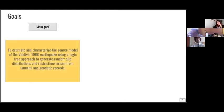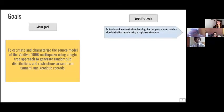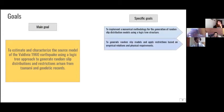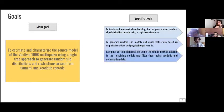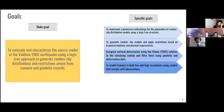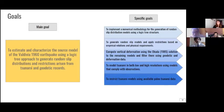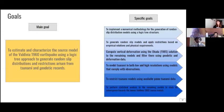The goals. The main goal is to estimate and characterize the source model of the Valdivia 1960 earthquake, using a logic tree approach to generate random slip distributions and restrictions arising from tsunami and geodetic records. And a specific goal is to implement a numerical methodology for the generation of random slip distribution models, then to generate these random distribution models, then compute vertical deformations using the Okada 1985 solution to the remaining models after filtering them, using geodetic and deformation data. With the remaining models, to model tsunami in both low and high resolutions, using models that comply with the observations. And finally, to restrict tsunami models using the available paleo tsunami data. At the end, we will perform a statistical analysis of the remaining models to study its convergence, its degree of convergence, towards the known 1960 Valdivia earthquake source models.